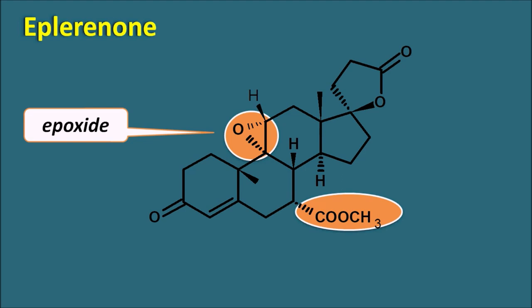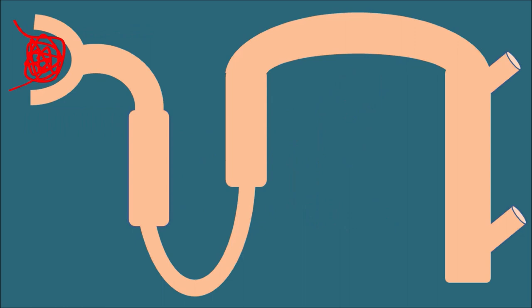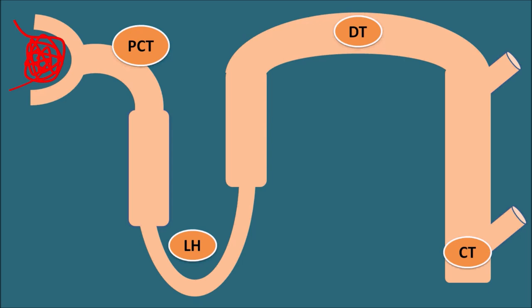So gynecomastia and menstrual disorders are less pronounced with eplerenone. Now let us see how these potassium-sparing diuretics act. In the structure of the nephron, diuretics act at different positions: the proximal convoluted tubule (PCT), the loop of Henle, the distal tubule, and the collecting tubules.